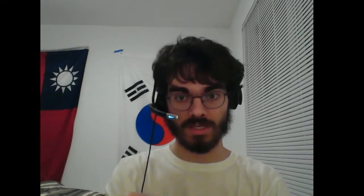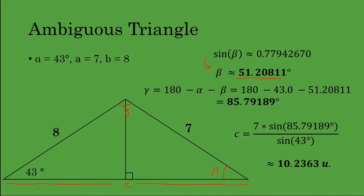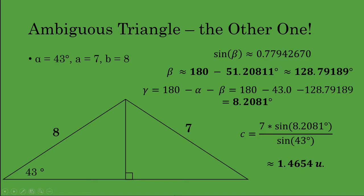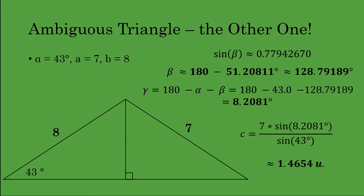But remember, we're not done yet. We've only done half the work — we've found three values for one particular triangle. The other triangle we can get by taking 180 minus this initial value of beta. So this is the other possible triangle. The value of beta is 180 minus 51.21, so it's actually an obtuse angle — about 128.8 degrees.